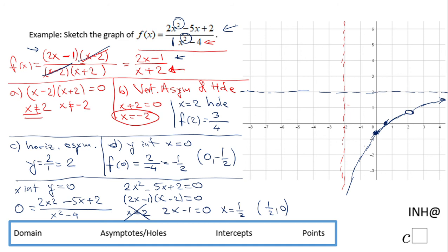I need to look at how the left side is gonna look. I'm gonna pick a number less than negative 2, like negative 3, and see if it's more than 2 or less than 2.